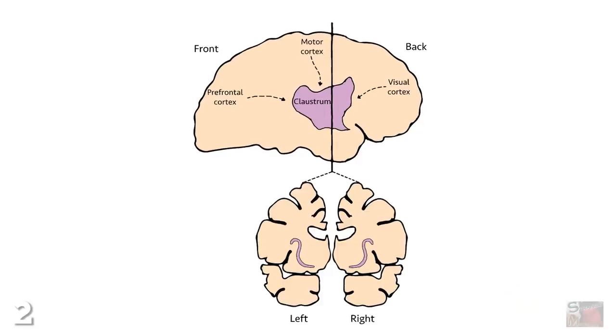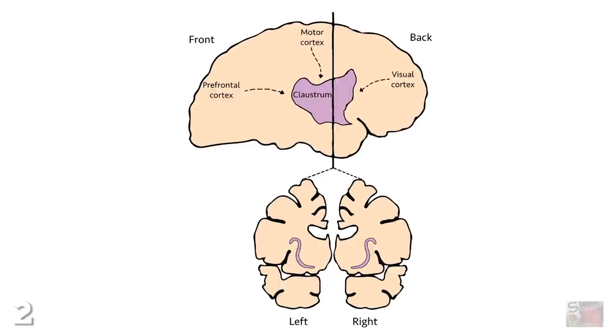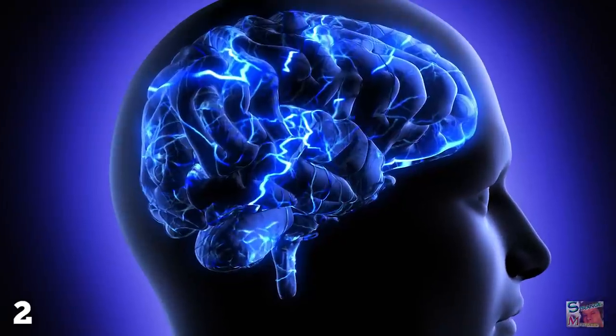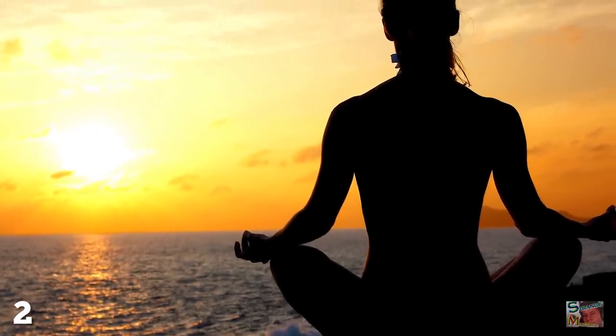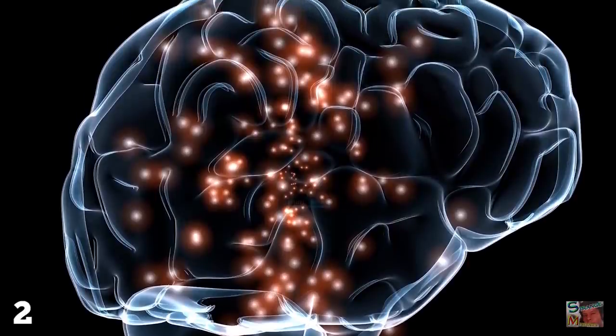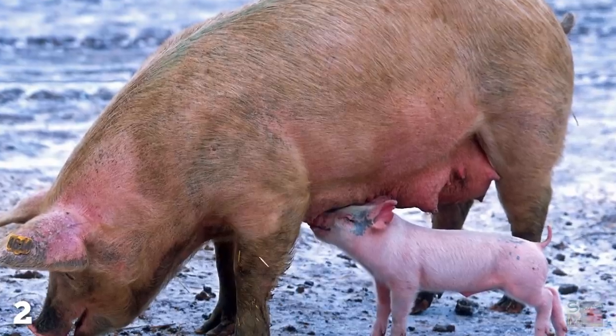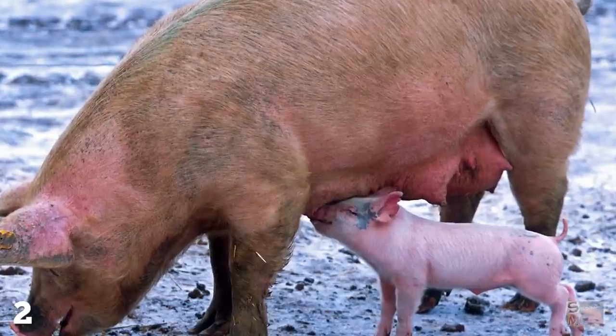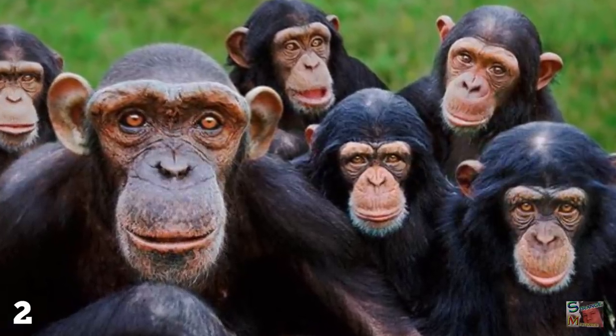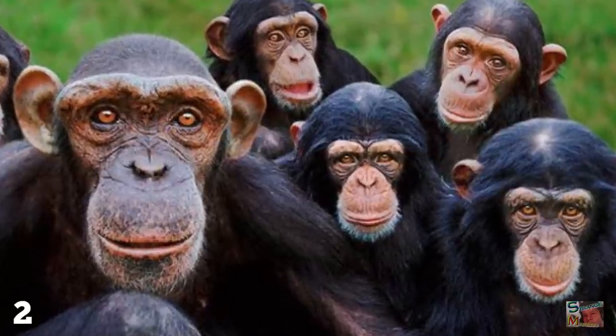We have determined that the claustrum facilitates communication between the two hemispheres of the brain, and the seamless nature of this synchronicity is thought to be crucial in the achievement of consciousness. How the claustrum does this is yet to be identified, but we do know this region is present in the brains of all mammals. However, when a group of primates had their collective claustrums probed in 2010, theirs did not appear capable of merging information from separate areas of the brain.